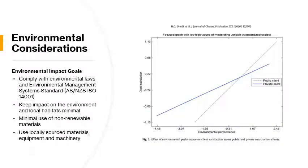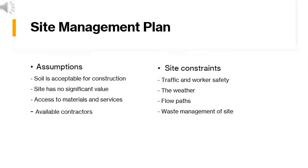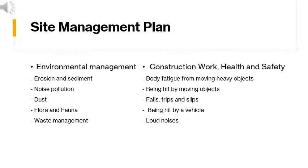The Environmental Considerations section gives an introduction to the Environmental Management Plan, outlining the environmental goals of the project and demonstrating the importance of environmental performance for stakeholder satisfaction. Environmental safety is vital for the construction stage of the project to commence. It was assumed that the soil was sound for construction, the area had no significant environmental value, and the site had access to all essential services. Some site constraints include worker safety due to local traffic, the weather, flow paths needing diversion, and waste management on site. The Environmental Management Plan covers topics such as erosion and sediment management, dust and noise pollution, flora and fauna management, and waste management.